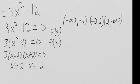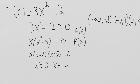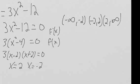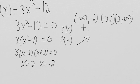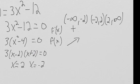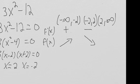We want to figure out whether f prime is positive or negative on each interval. The derivative 3x² - 12 has end behavior up, up, so it starts positive and ends positive. So f prime is positive on the first interval, which means f(x) is increasing. Then it crosses at -2 and becomes negative, so f(x) is decreasing. Then it crosses again to go positive, so f(x) is increasing again.